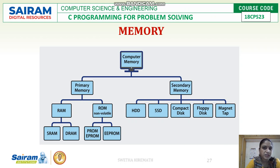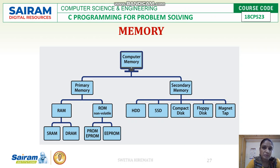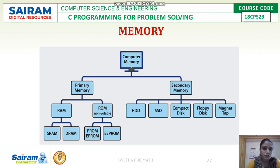Primary memory is divided into two types: RAM and ROM. RAM is temporary and volatile memory — whenever power goes off, the data stored in RAM is lost. ROM is permanent and non-volatile memory — data is always present regardless of power. RAM is further divided into static RAM (SRAM) and dynamic RAM (DRAM).